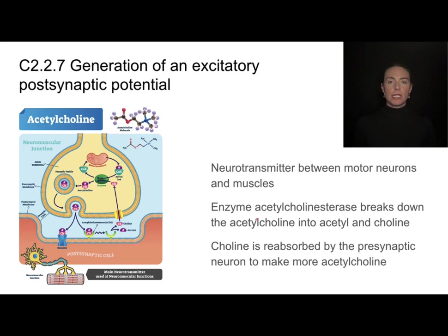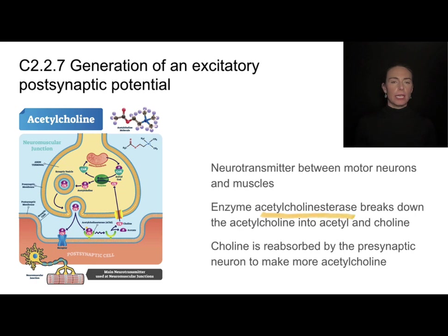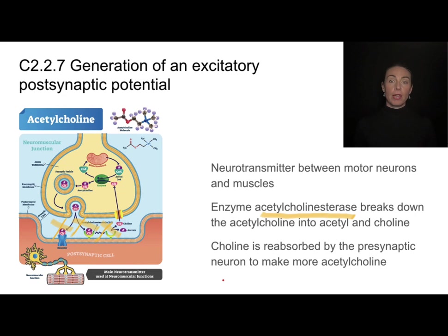There's an enzyme called acetylcholinesterase — notice acetylcholine is right there in the name. This enzyme comes into the synapse and breaks down the acetylcholine. It breaks it down into two parts: acetyl and choline. The choline is then reabsorbed back into the pre-synaptic neuron in order to manufacture more acetylcholine. If you're studying at higher level, acetyl may remind you of concepts from cell respiration.